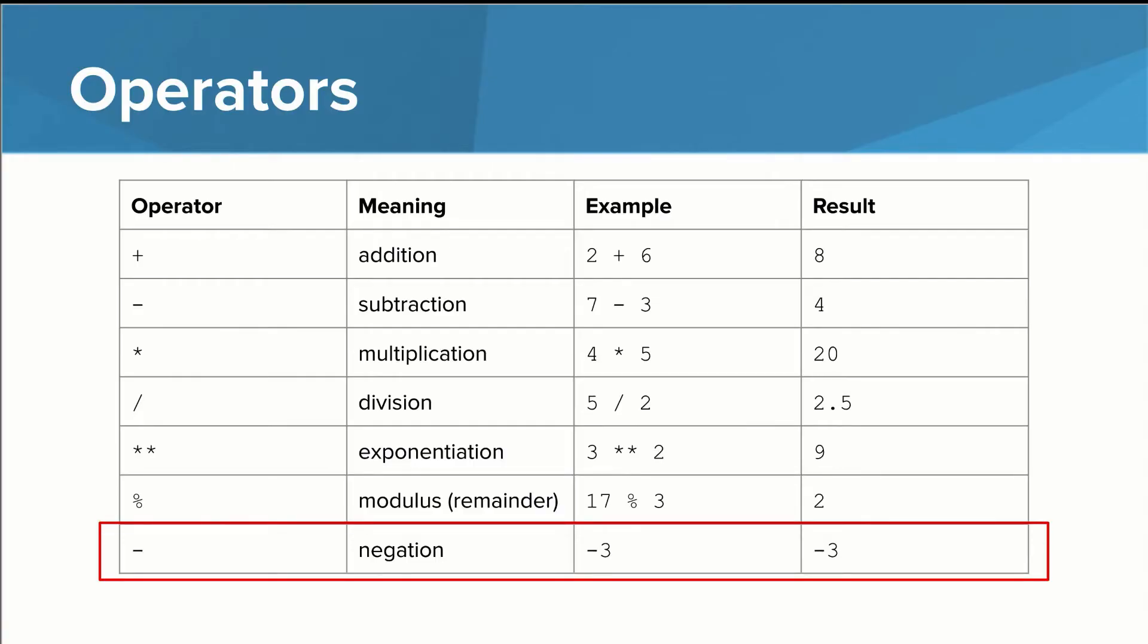Then I want to give some special attention to the last operator because it is the only one that only applies to one number. The negation operator is different from the subtraction operator. It takes the negative of a number. So in this example, we use it with the number 3, and the result is just negative 3.